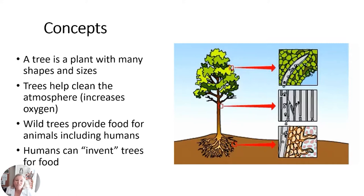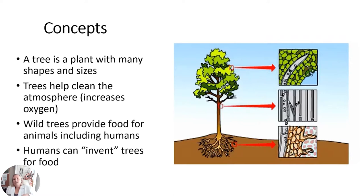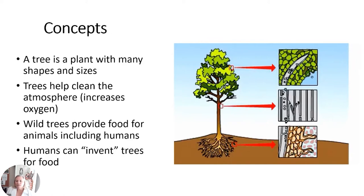Did you know that humans can invent trees? We create different types of trees. This picture shows a tree from the bottom — the roots are spread out taking in water and minerals from the soil, which are carried up through the trunk. At the very top, the plant is transpiring — giving off water moisture as it releases oxygen. A plant makes its own food using minerals and water from the soil.